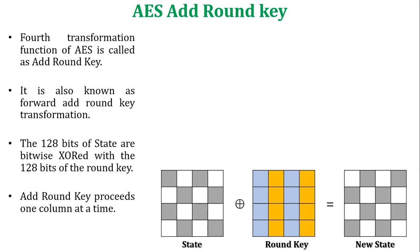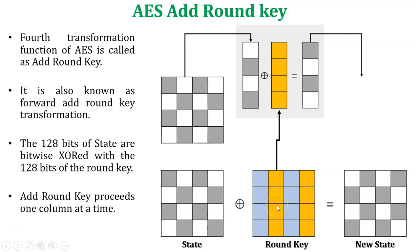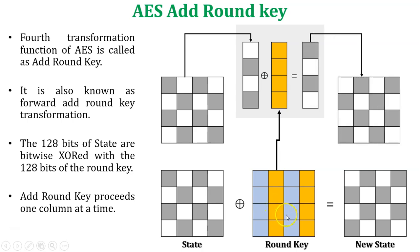Now let's discuss how AES add round key is executed. For example, the second column of the state array is XORed with the second column of the round key, and it generates the second column of the new state array. So add round key proceeds column-wise.